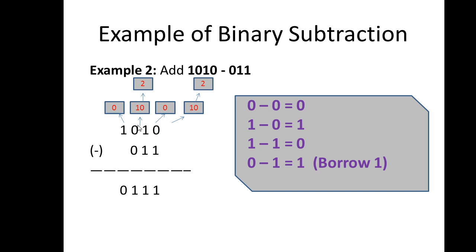The next part: 0 minus 1 again — the fourth rule applies. The next digit is 0, so we move forward. We cut the next 1 because we are taking a borrow, so it becomes 0. That position becomes 10 in binary, equivalent to 2. After giving the borrow it is equivalent to 1.